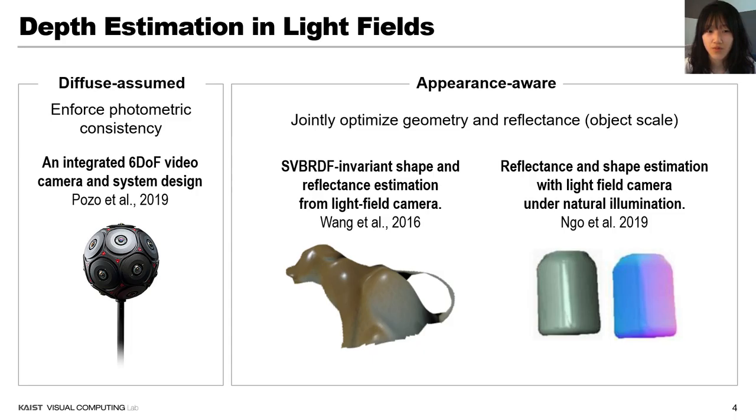Few works divide appearance-aware depth estimation in light fields by jointly optimizing geometry and reflectance. Wang et al. employ a differential approach on objects captured by micro-baseline light fields camera. Ngo et al. used an iterative method to ease Lambertian assumption. Both works are suitable for micro-baseline light fields in object scale and hardly extendable to indoor scenes.